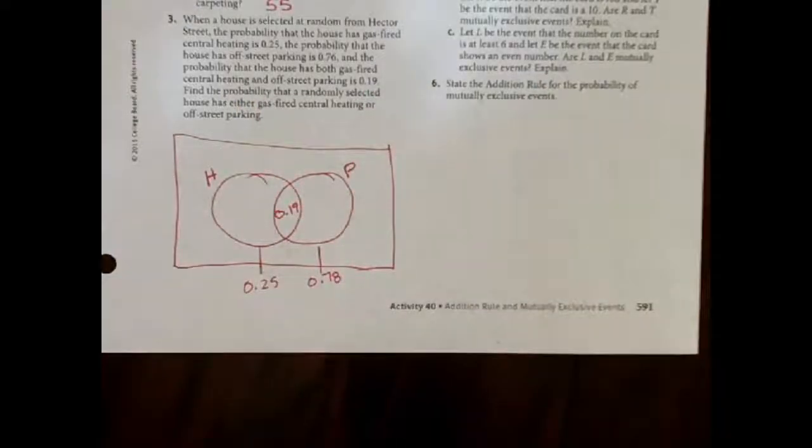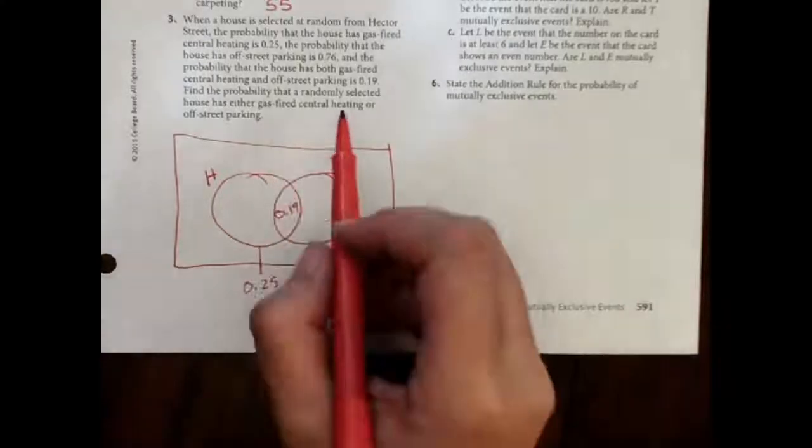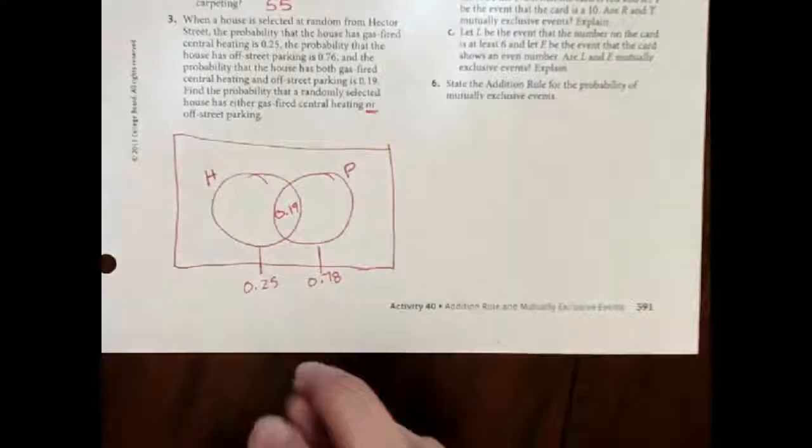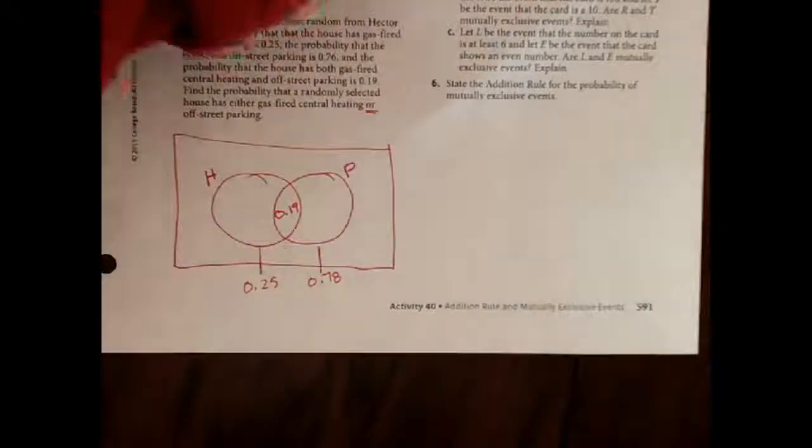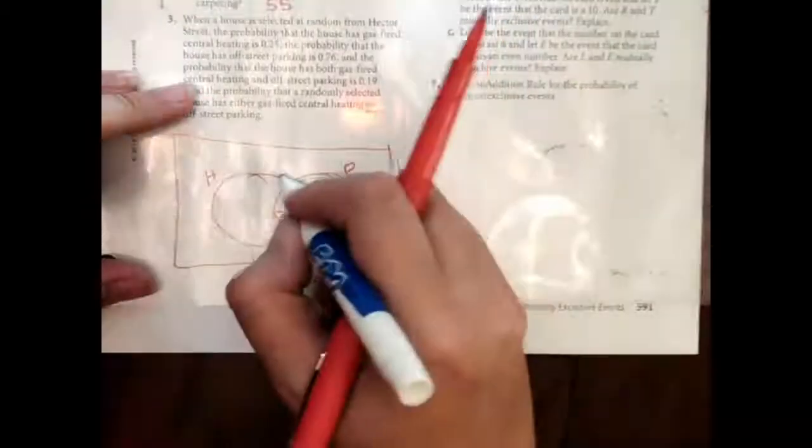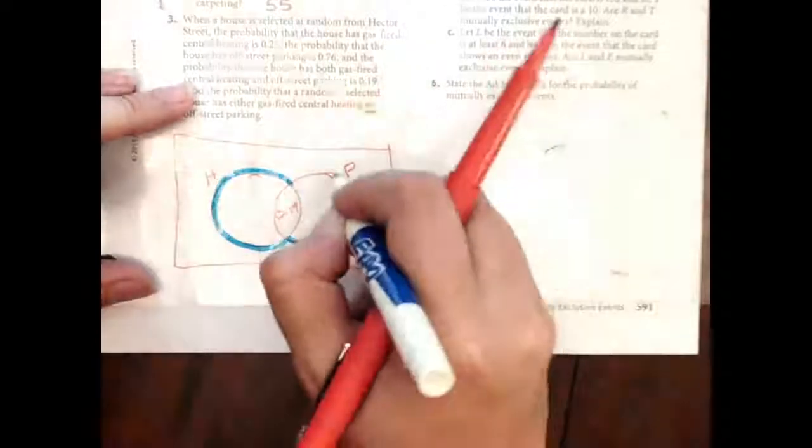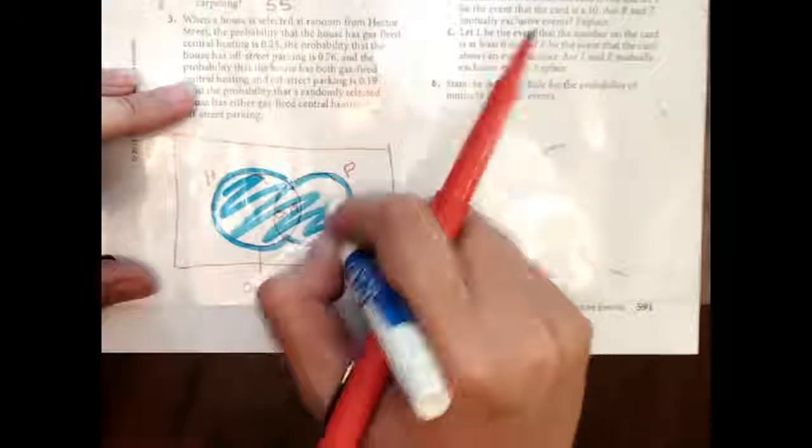So then it says, find the probability that they have this or that. Well, I know to find or, I really need this whole part here. I need to find all of this to get the or.